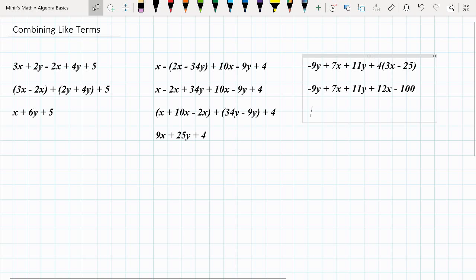So let's combine our terms of x. We have 7x, we have plus 12x, and yep, that's it. Then we have negative 9y and 11y, so we'll go 11y minus 9y because it looks a little bit cleaner.